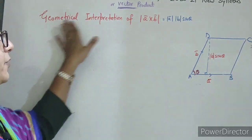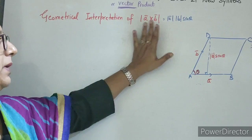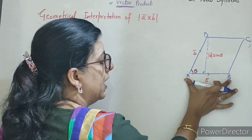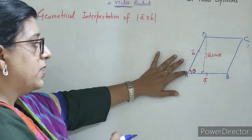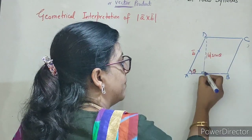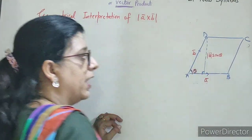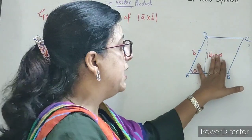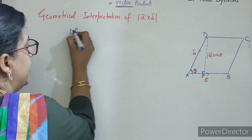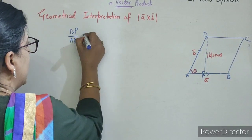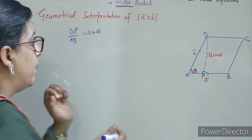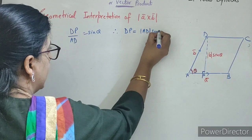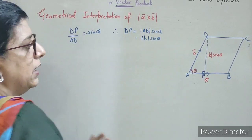Ab hum dekhenge geometrical interpretation of mod of A cross B. Hum ne liya ek parallelogram jiski adjacent sides hain A and B — AB hai A bar, AD hai B bar, aur yeh angle hai. Yaha mein ne perpendicular drop kiya. Opposite upon hypotenuse = sin theta. So yeh DP height kitni aa jayegi? DP upon AD equals to sin theta — trigonometry mein opposite upon hypotenuse. Therefore DP = mod AD × sin theta, that is mod B × sin theta.